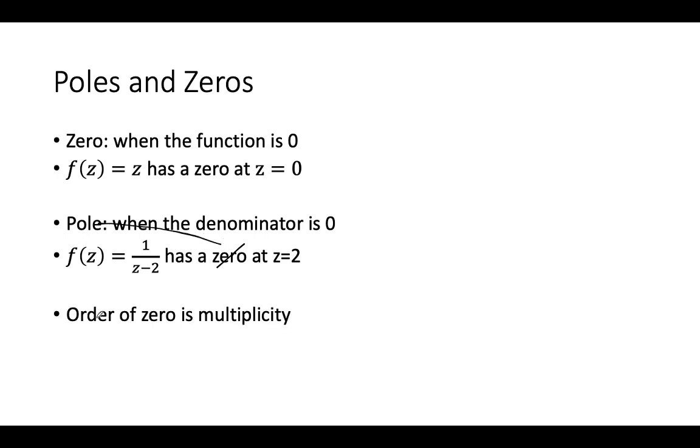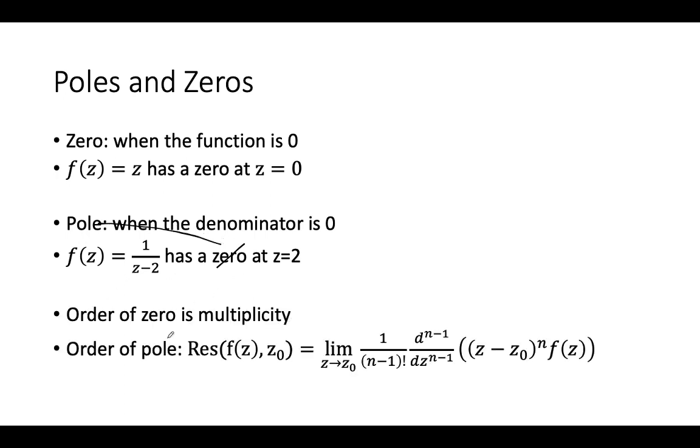The order of a zero is multiplicity. The order of a pole is given by this residue formula. What you do is you plug in this function f of z at the point you want to find the pole, and you see what the lowest n is, at least 1.